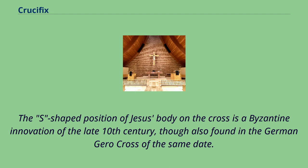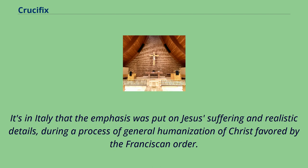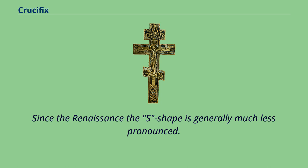The S-shaped position of Jesus' body on the cross is a Byzantine innovation of the late 10th century, though also found in the German Gero cross of the same date. Probably more from Byzantine influence, it spread elsewhere in the West, especially to Italy, by the Romanesque period, though it was more usual in painting than in sculpted crucifixes. It is in Italy that the emphasis was put on Jesus' suffering and realistic details, during a process of general humanization of Christ favored by the Franciscan order. During the 13th century the suffering Italian model triumphed over the traditional Byzantine one anywhere in Europe, also due to the works of artists such as Giunta Pisano and Cimabue. Since the Renaissance the S-shape is generally much less pronounced.